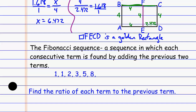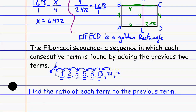If I take one term and add the term before it, that gives me the next term. Starting with 1, adding nothing gives 1. Then 1 plus 1 gives 2, which is the next term. Then 2 plus 1 gives 3. Then 3 plus 2 gives 5. Then 5 plus 3 gives 8. Continuing: 8 plus 5 gives 13, 13 plus 8 gives 21, 21 plus 13 gives 34. The next ones would be 55 and then 89. That pattern continues — we keep adding the term before it to get the next term.